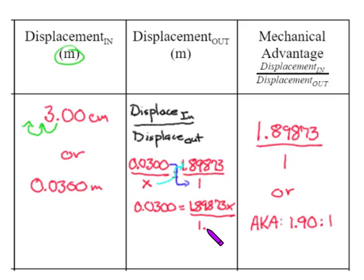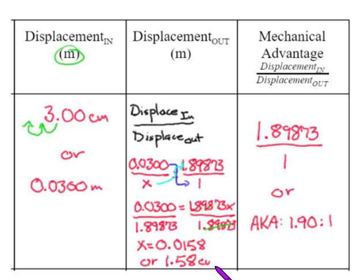I am going to divide this side by 1.89873, and this side by 1.89873. To get x to be equal, I do that so that I can cancel. When I do that, I get x to be 0.0158, or I can write to 1.58 centimeters.